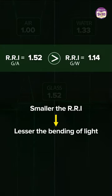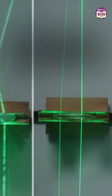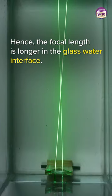The smaller the ratio of relative refractive index between two mediums, the lesser the bending of light. Hence, the light bends lesser in the glass water interface making the focal length longer.